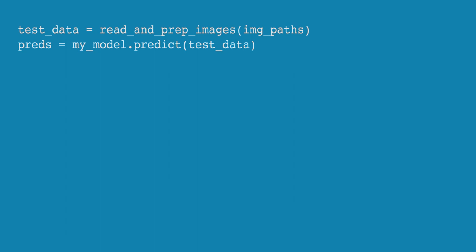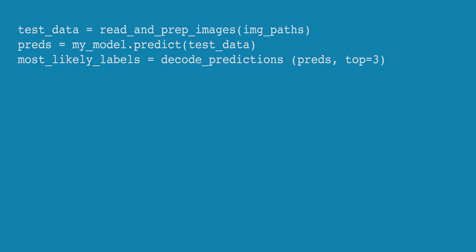This line works the same way prediction works in libraries like scikit-learn. We have predictions about what's in each image. We had four photographs and our model gave a thousand probabilities for each photo — the chance that the image was a tiger shark, a Pomeranian, a toothbrush, and so on. It's convenient to focus on the probabilities for what the model thinks is in the image. Keras includes a function called decode_predictions to extract the highest probabilities for each image. We call that function with the prediction results and tell it to give us the top three probabilities for each photo.